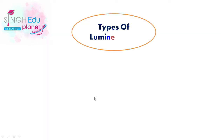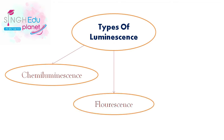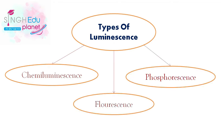Now there are three types of luminescence. First, that is chemiluminescence. Second is fluorescence. And third is phosphorescence. So we will discuss all these one by one.